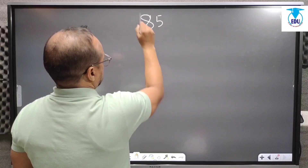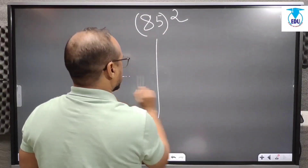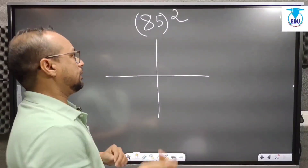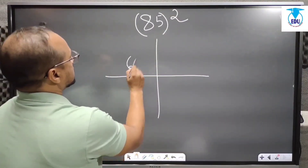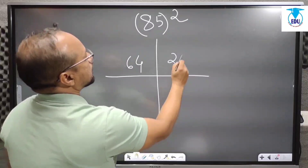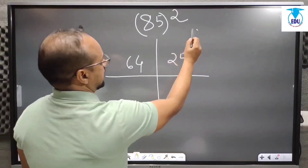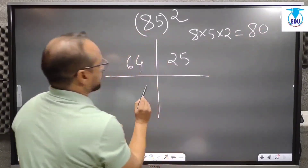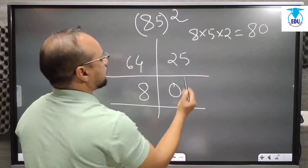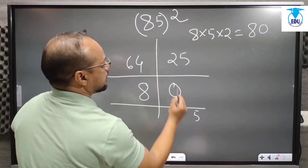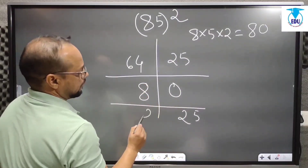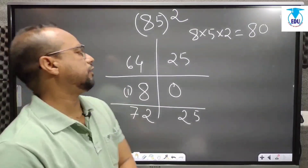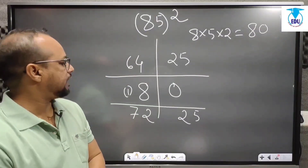Next example is 85 squared. Similar method: first we take the square of 8, which is 64, then the square of 5, which is 25. Then we multiply 8, 5, and 2: that gives us 80. We put 80 in this way. Then we add the columns: 5 is here, 2 plus 0 is 2, 4 plus 8 gives 12 — carry 1 — so 6 plus 1 is 7. The square of 85 is 7225.